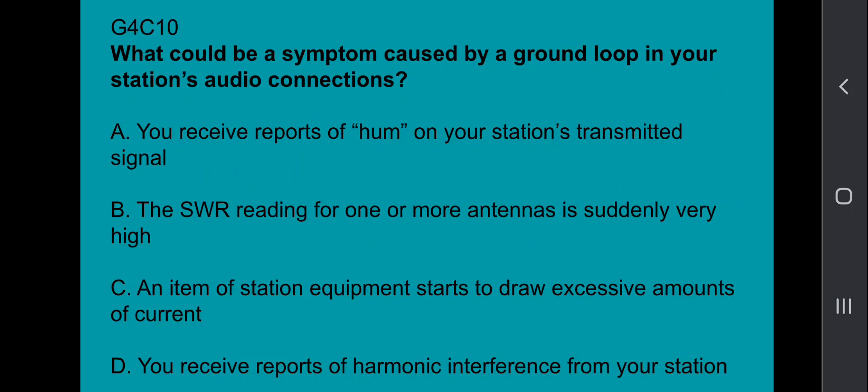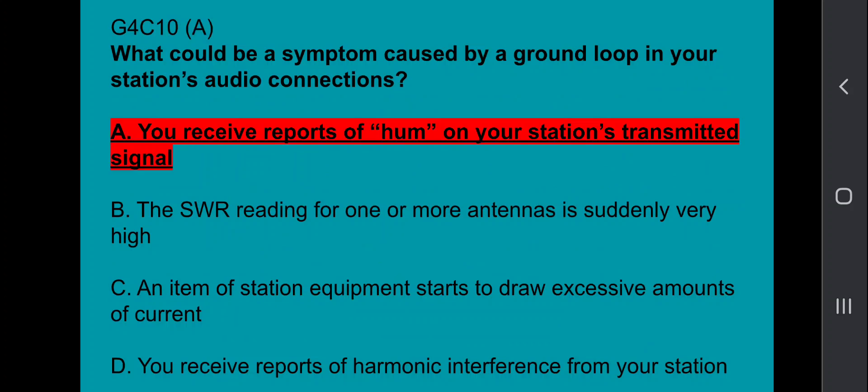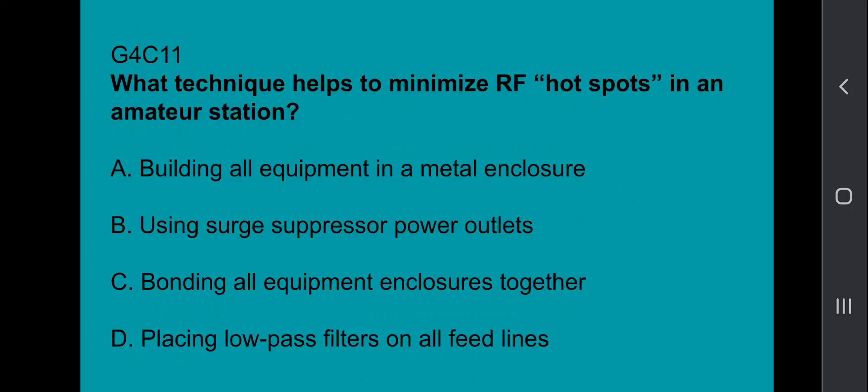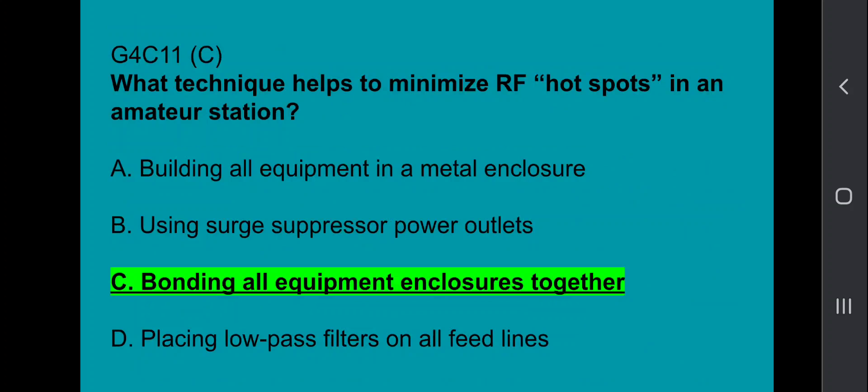G4C10, what could be a symptom caused by ground loop in your station's audio connections? You received reports of hum on your station's transmitted signal. G4C11, what technique helps to minimize RF hotspots in an amateur station? Bonding all equipment enclosures together.